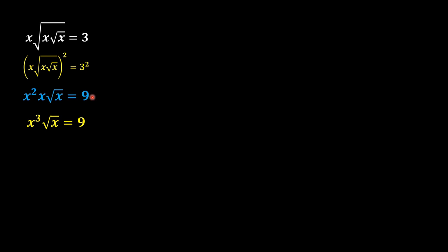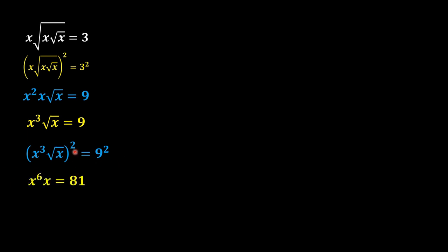In the next step, in order to eliminate the square root, we should apply squaring again on both sides of the equation. When we apply this square to x cubed we get x to the power 6, and when we apply the square to the root, x comes out from the root, and 9 becomes 81.